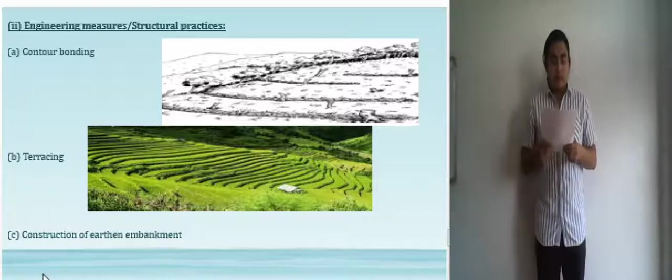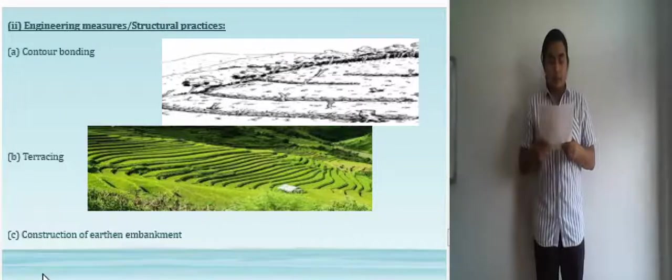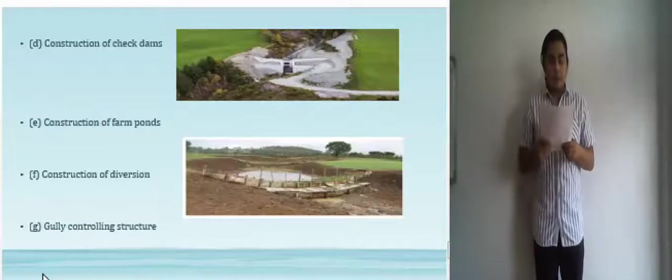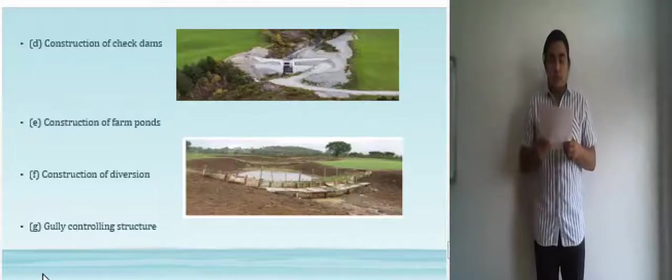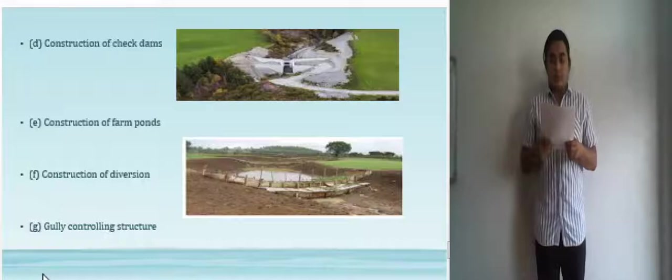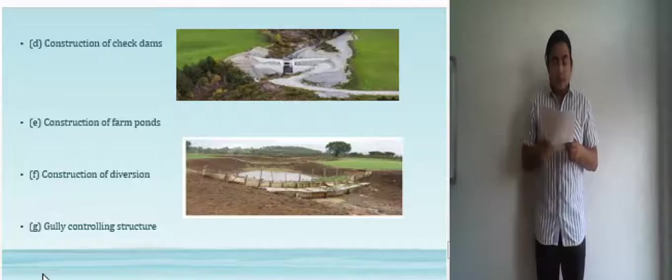And the next is construction of check dams. It's a small dam constructed across a drainage ditch, swale or channel to lower the velocity of flow. Reduced runoff velocity reduces erosion and gully formation in the channel and allows sediments to settle out. A check dam may be built from stone, sandbags, filled with gravel or logs.